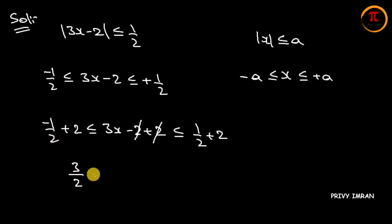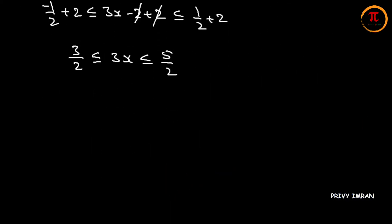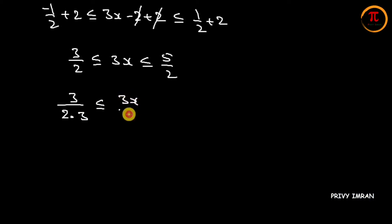So we have 3 by 2 is less than or equal to 3x is less than or equal to 5 by 2. Now let me divide by 3 on both sides: 3 by 2 divided by 3 is less than or equal to 3x divided by 3 is less than or equal to 5 by 2 divided by 3.